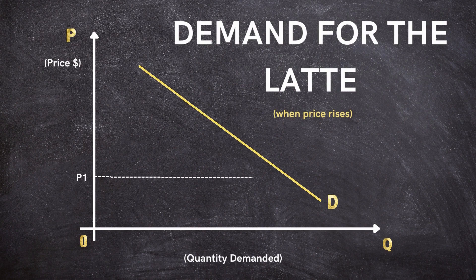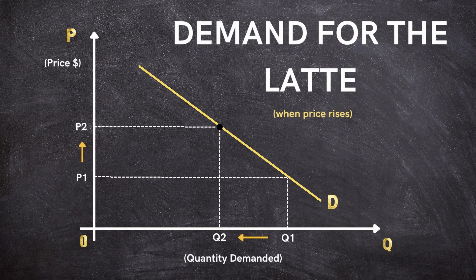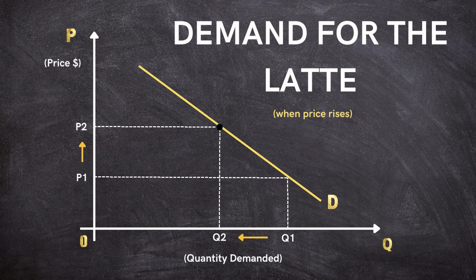As the price rises from P1 to P2, the quantity demanded falls from Q1 to Q2, tracing a movement along the demand curve. This reaction is a prime example of how price changes directly influence our buying decisions.